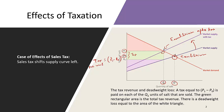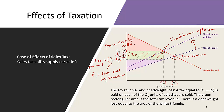P1 is the price actually paid by consumers, whereas P0 is the price kept by sellers. Sellers get to keep only P0, and the rest goes to the government. The total tax revenue collected is the tax per unit — which is P1 minus P0 — times Q1, the quantity being sold.